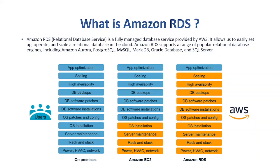Amazon Aurora is a proprietary AWS relational database engine, which is compatible with MySQL and PostgreSQL. Amazon RDS offers several benefits, pretty much like all other services in cloud, like automatic backup, high availability and durability, scalability, and security.